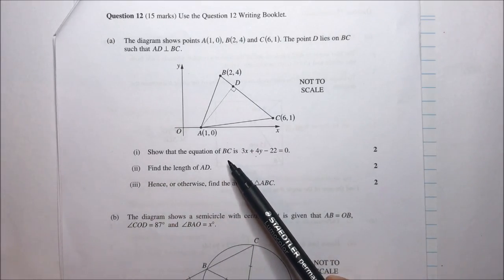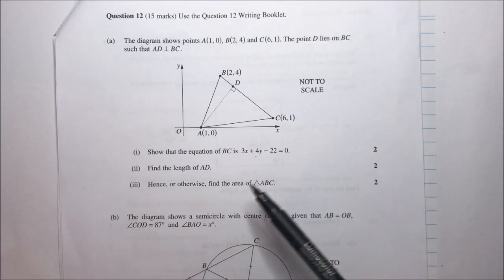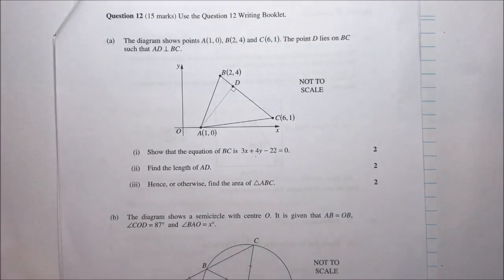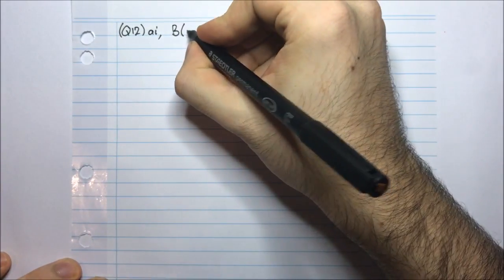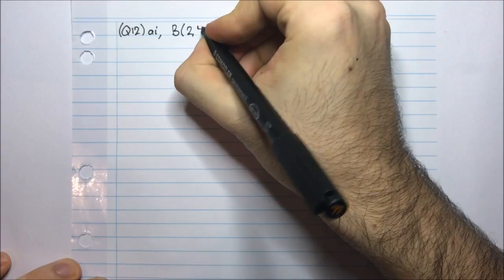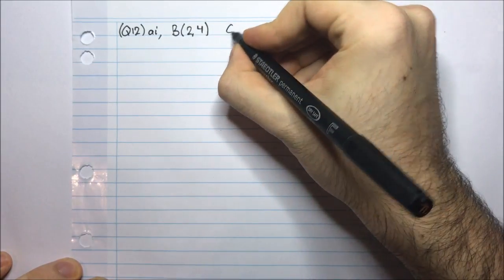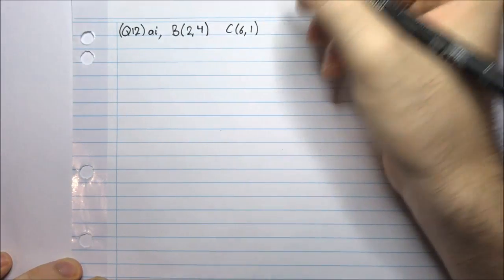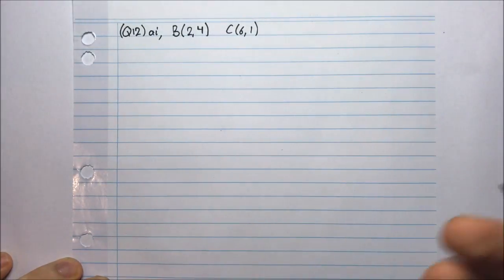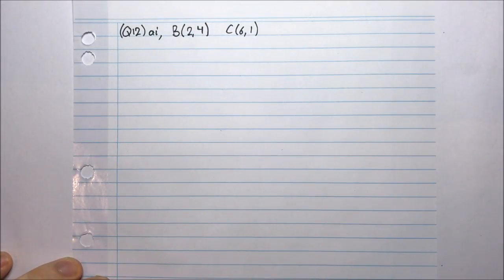So for BC, B has coordinates and C has coordinates, and I want to find the equation of BC. I have two points on that line and that's enough to work it out — two points define a line. So I'm going to use the two-point formula.